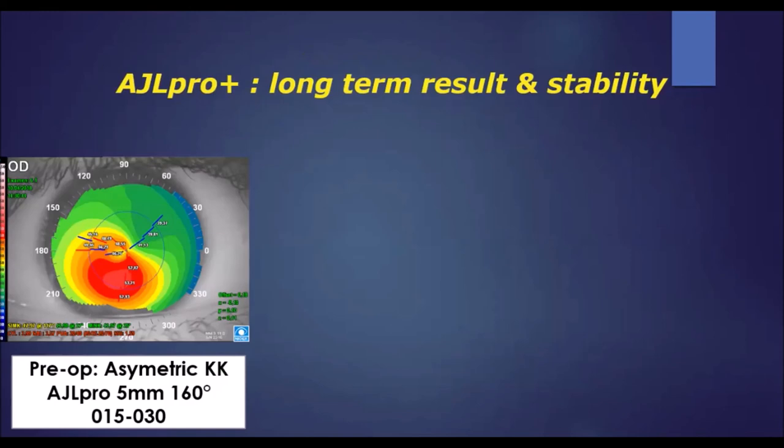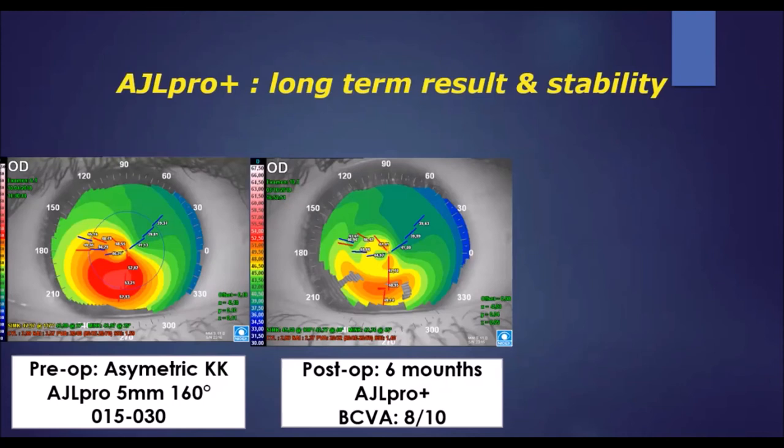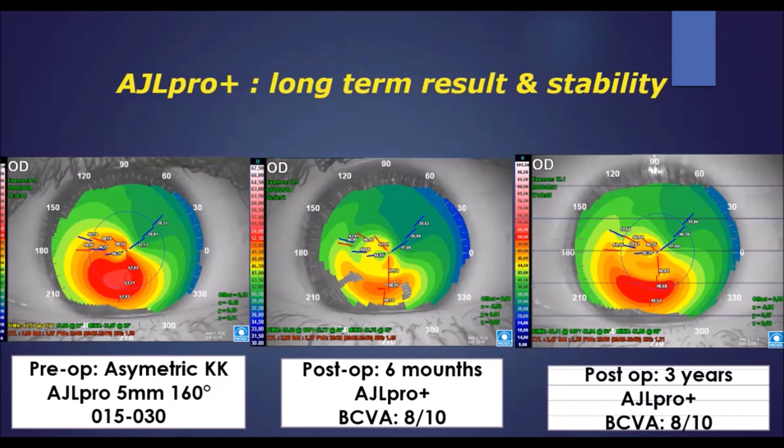This example shows the long-term results and stability of progressive IGL Pro segments. A case of keratoconus with duck morphology was treated with IGL Pro at 5 millimeters. Post-operative topography at six months and at three years follow-up both show that the topography and visual acuity remain very stable after three years.